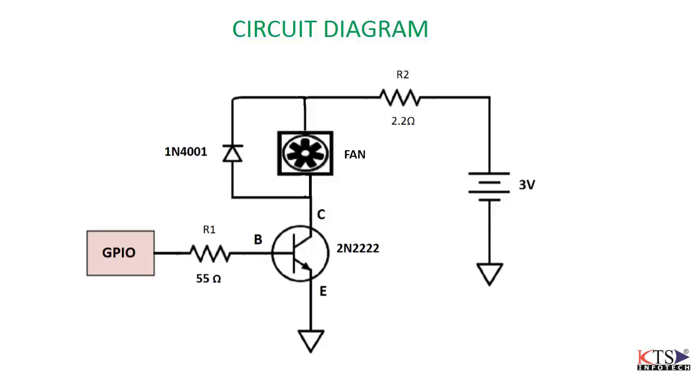A 55 ohm resistor is connected between the base and GPIO to reduce the base current.